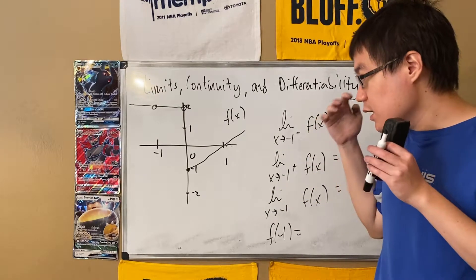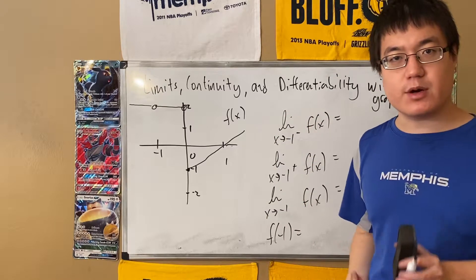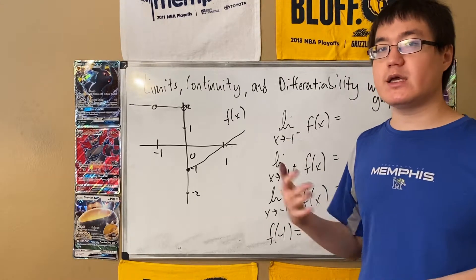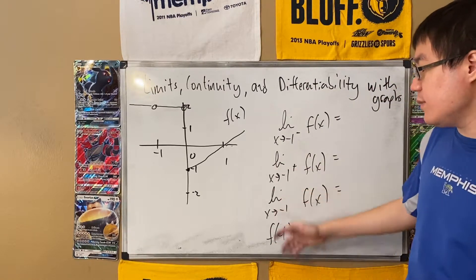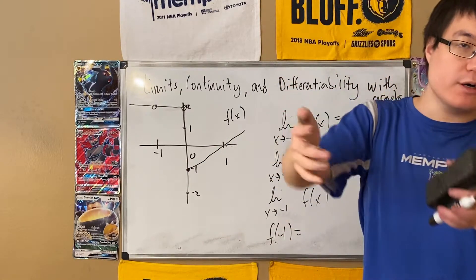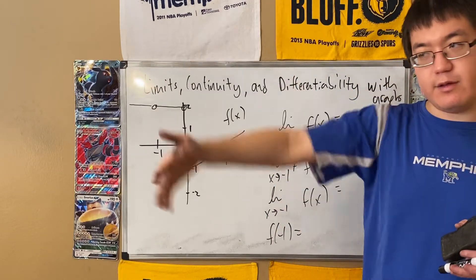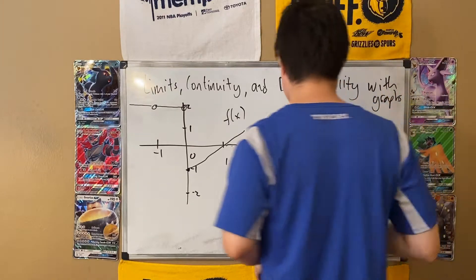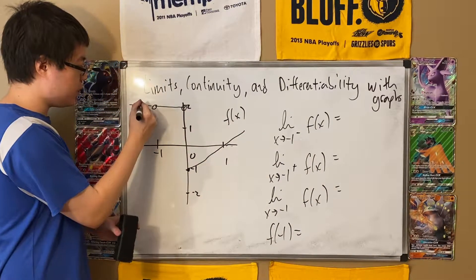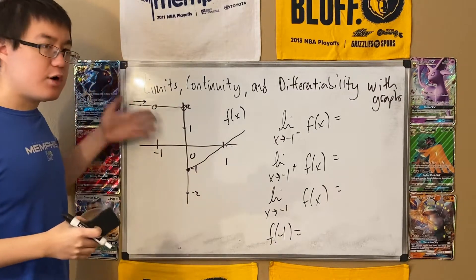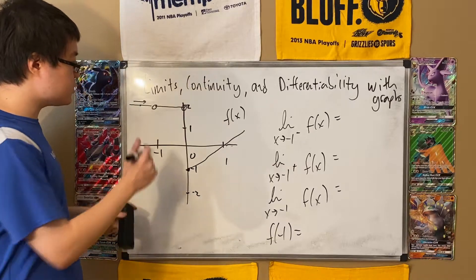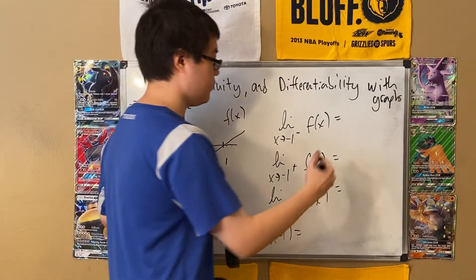Same thing from the positive side — you approach from the right, looking at numbers like 0, −0.5, −0.9, −0.999999 — and see what y-value you're heading toward. Remember: for all these limits, f(−1) does not matter. What's actually there does not matter at all. We only care about what we're going towards. So, approaching negative 1 from the left along this function, the arrow is pointing to y = 2. So this left-hand limit equals 2.